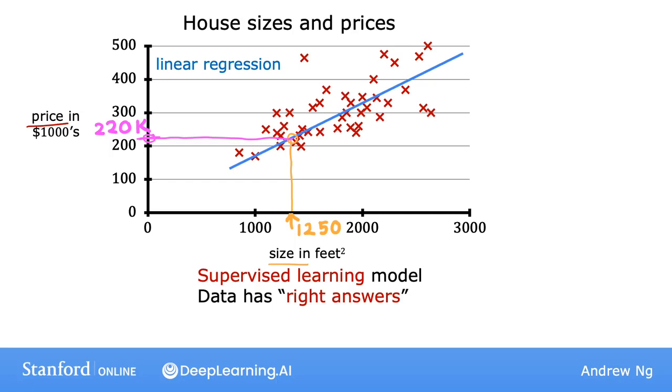This linear regression model is a particular type of supervised learning model. It's called a regression model because it predicts numbers as the output, like prices in dollars. Any supervised learning model that predicts a number such as 220,000 or 1.5 or negative 33.2 is addressing what's called a regression problem. So linear regression is one example of a regression model, but there are other models for addressing regression problems too. And we'll see some of those later in course two of this specialization.